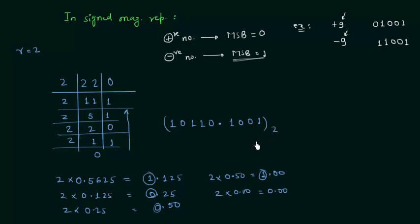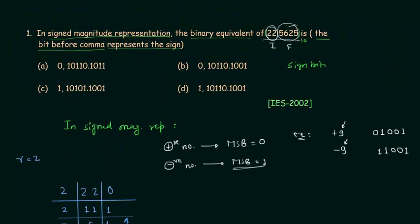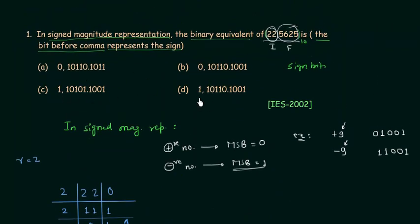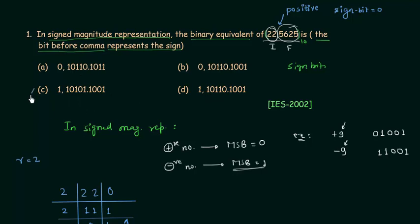So the number in binary is 10110.1001. If you see the four options, we have 0, 0, 1, 1 as the sign bits. This number is positive, so the sign bit should be 0. Looking at options C and D, the sign bit is equal to 1, so options C and D are incorrect. We are left with options A and B, which both have sign bit equal to 0.